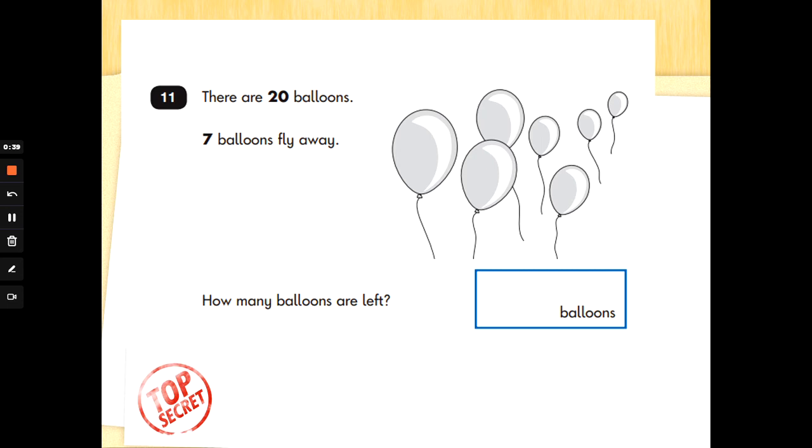Okay, so top tip. Always read the question all the way through before you decide what to do. There are 20 balloons. 7 balloons fly away. How many balloons are left? So we're starting with 20 balloons and 7 balloons go away. So I think that is asking us to do 20 take away 7.